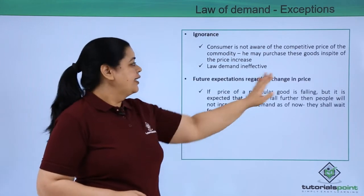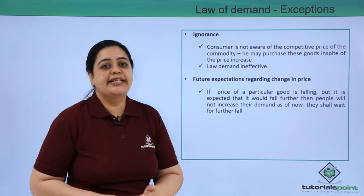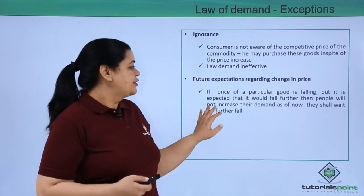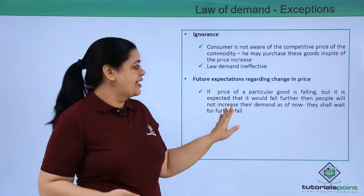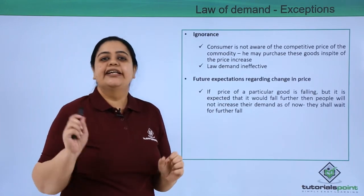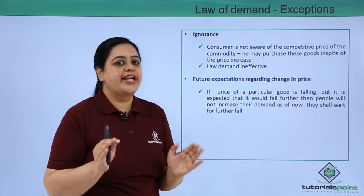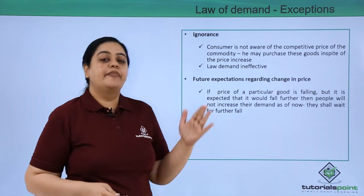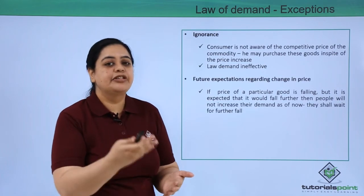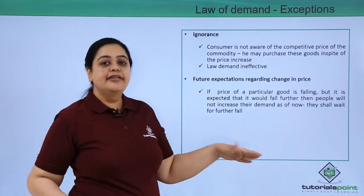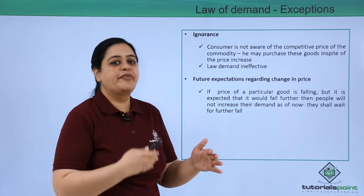If the consumer has future expectations regarding a change in price, the law of demand becomes ineffective. For example, in real estate — if the price of a house in my locality is falling but I am expecting it to fall further in the future, I will not demand a home now even because of the current fall. My expectation is that the price will fall further, and at that point I would go and purchase a home.